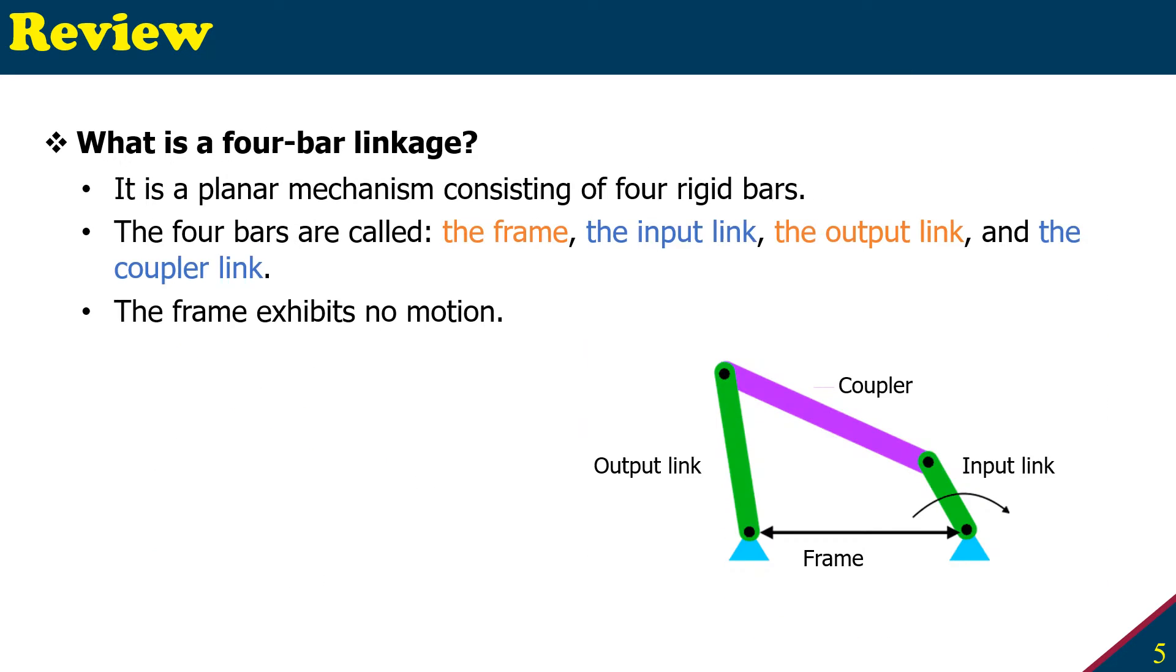So now let's move to our target linkage, which is our four bar linkage. What is a four bar linkage? It is a planar mechanism consisting of four rigid bars. The four bars are called the frame - this is the frame - and there will be an input link, an output link, and those two links will be connected by a coupler link.